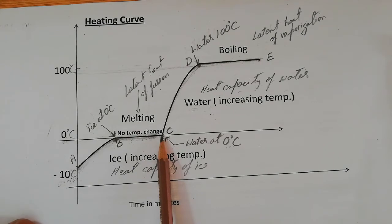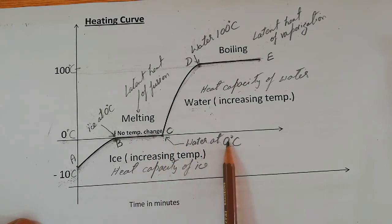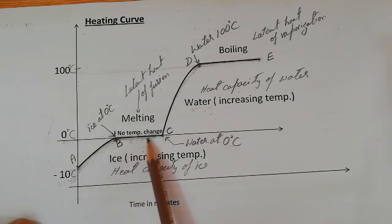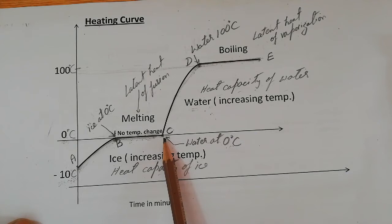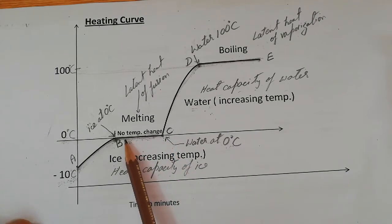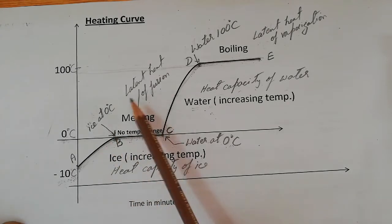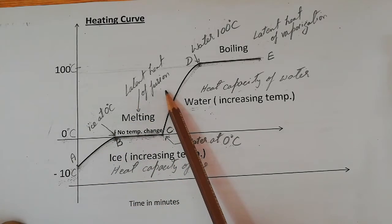At point C, the water will be at zero degrees Celsius. Initially it was ice at zero degrees Celsius, but at the end it is water at zero degrees Celsius. The heat energy absorbed during this portion of the graph can be calculated by the latent heat of fusion.